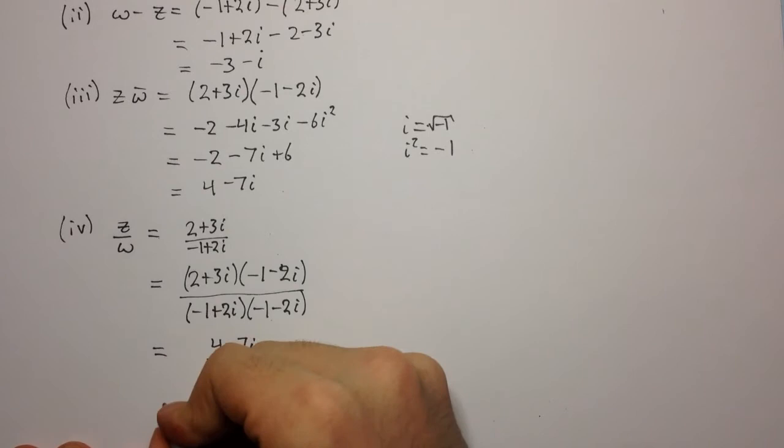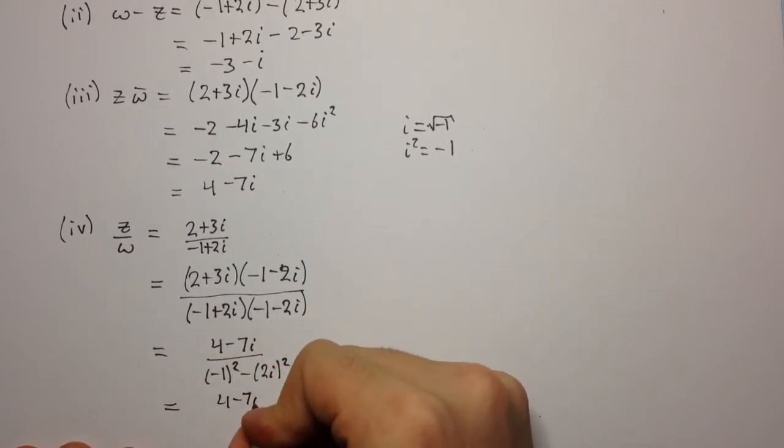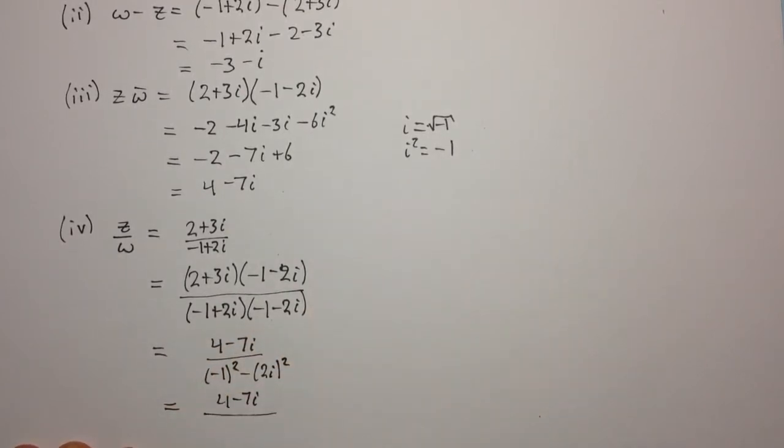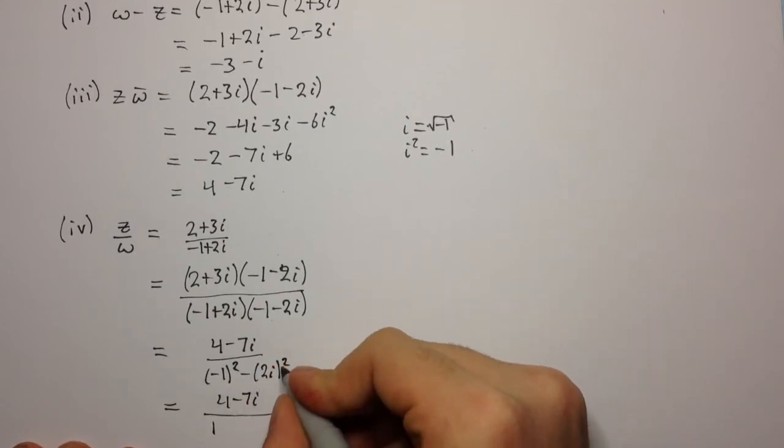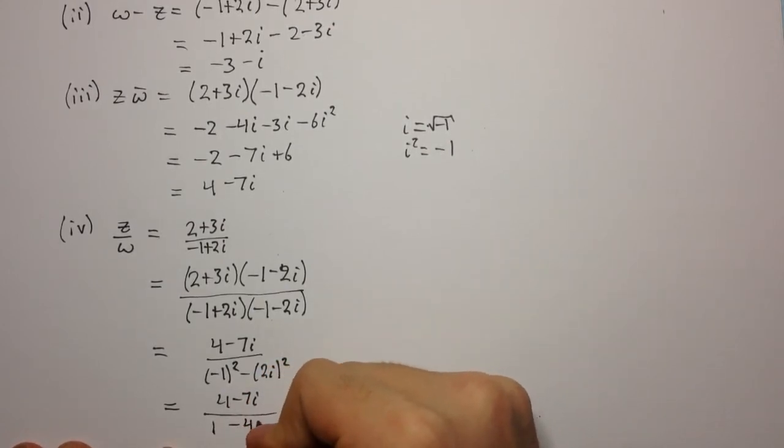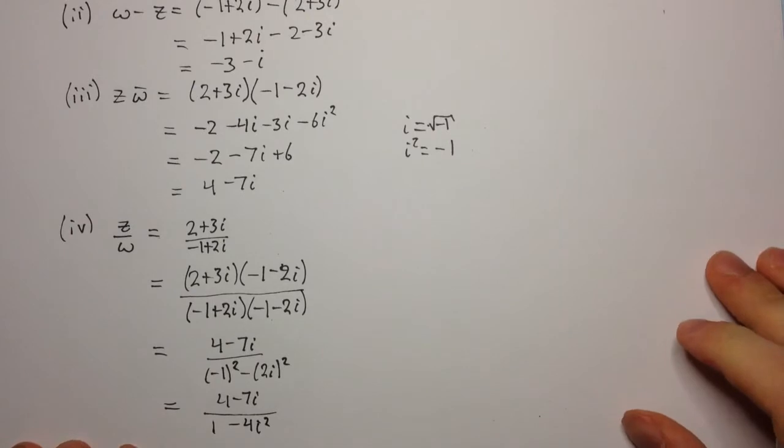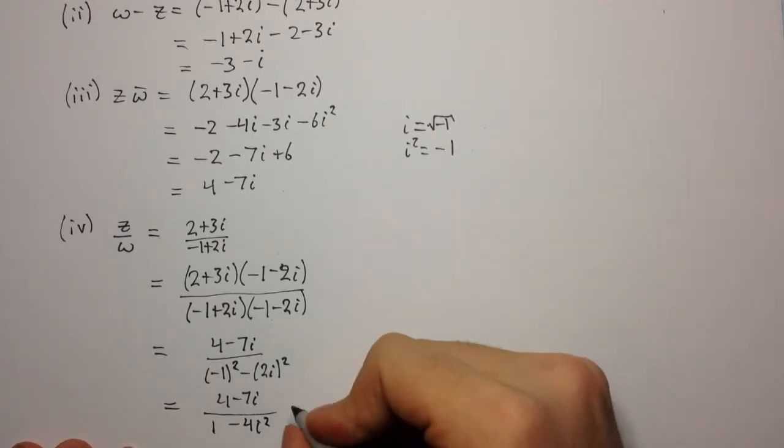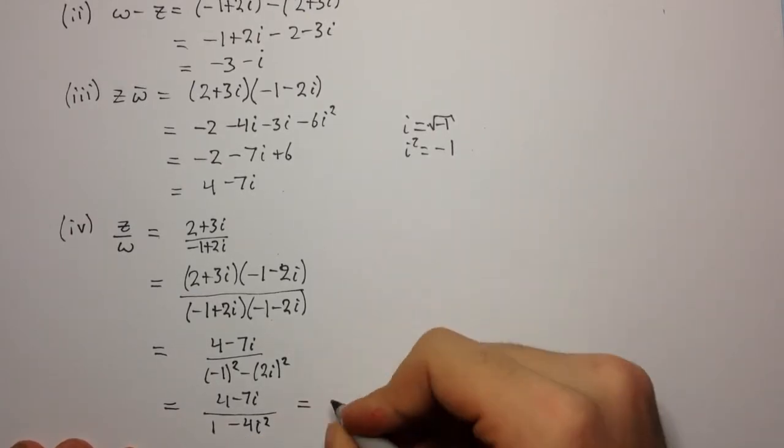We have 4 minus 7i over minus 1 squared is 1, and minus 2i squared is minus 4i squared. But again, i squared is minus 1, so this difference now becomes a sum.